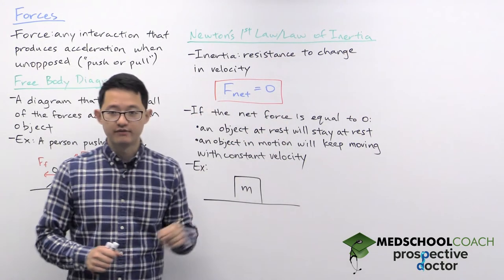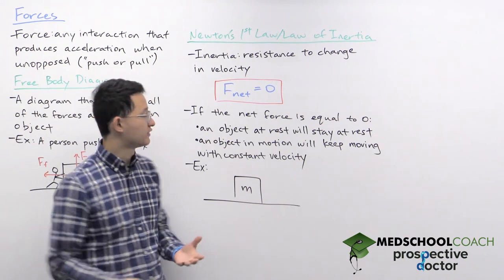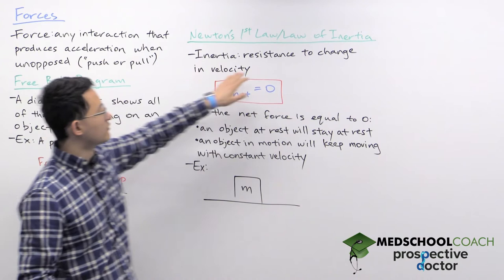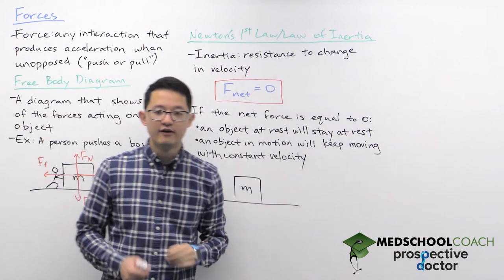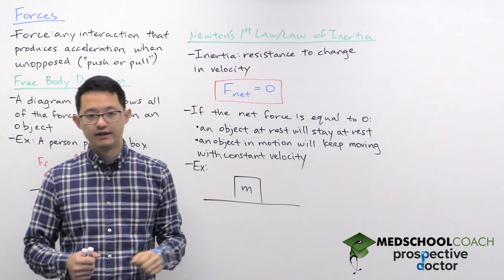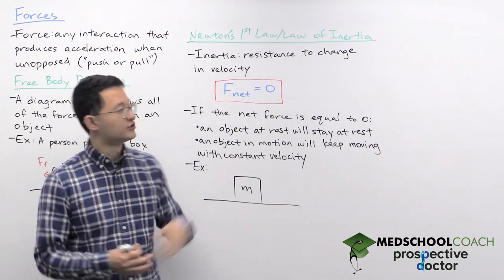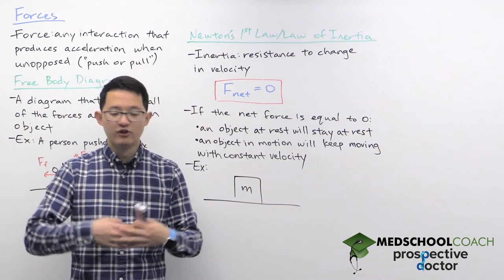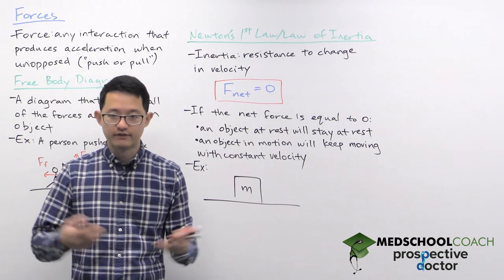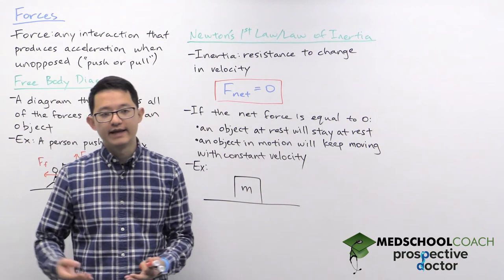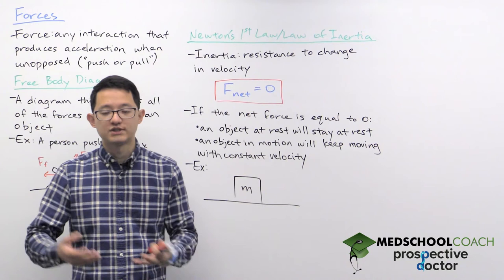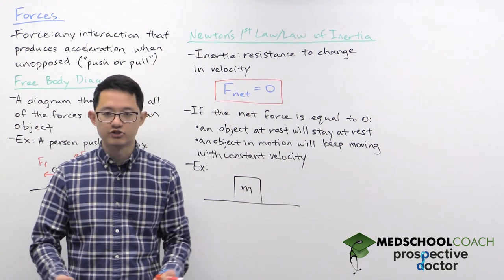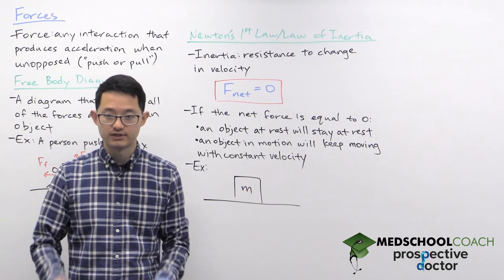Now inertia by itself is a new term, so we'll want to define what this is. You can think of inertia as the resistance to change in velocity. And where this comes from is the general statement for the law of inertia. That if no forces are acting in the object, or the net force is zero, then an object at rest will stay at rest. And an object in motion will continue in motion with constant velocity.